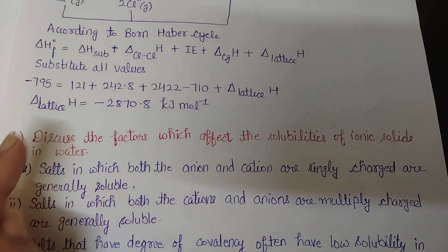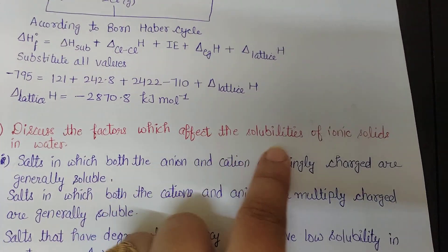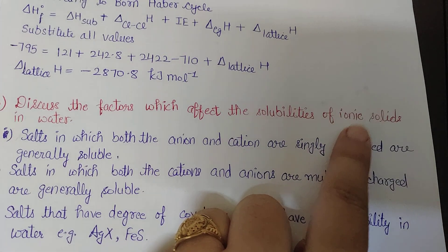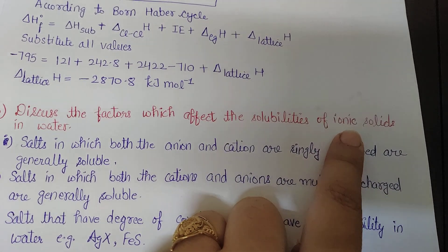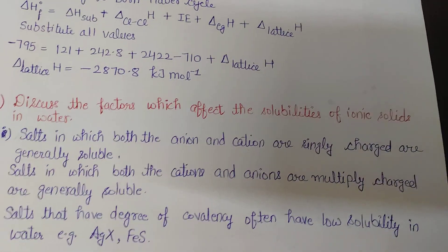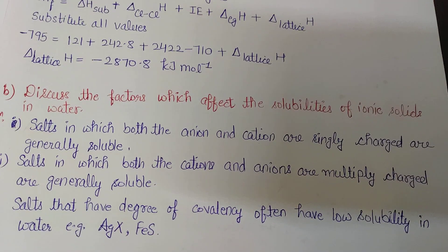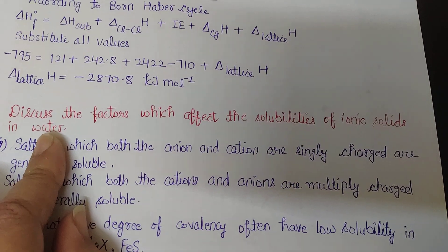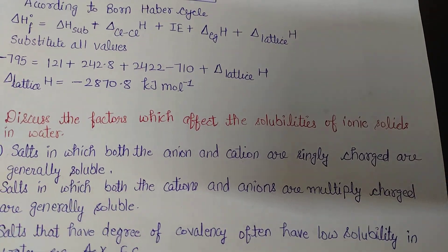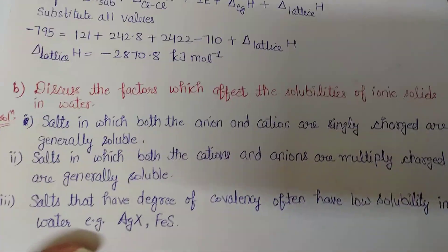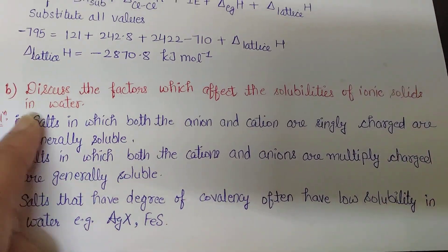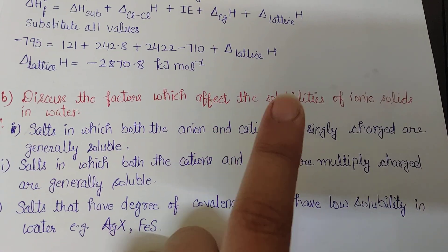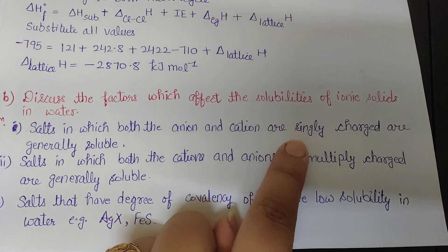The second question is: discuss the factors which affect the solubility of ionic solids in water. Ionic solids are solids which get ionized — for example, sodium chloride, which is readily soluble in water. We have to discuss the factors that influence this solubility.